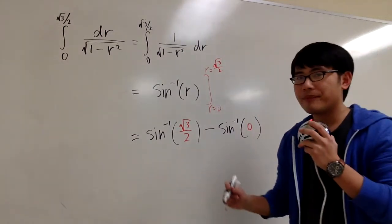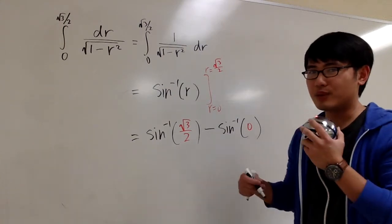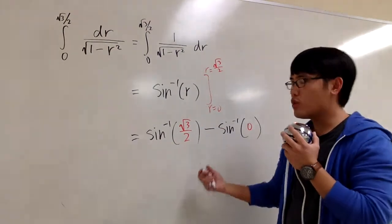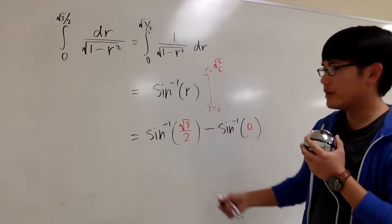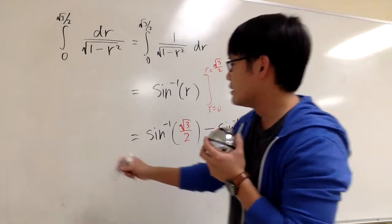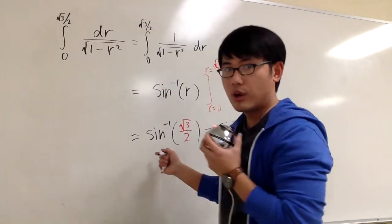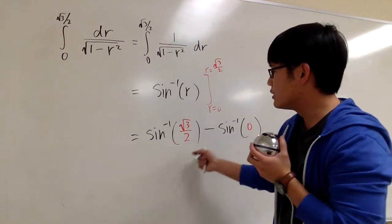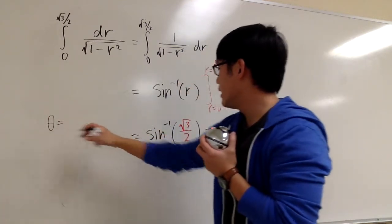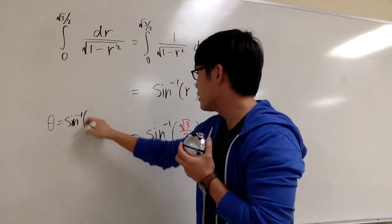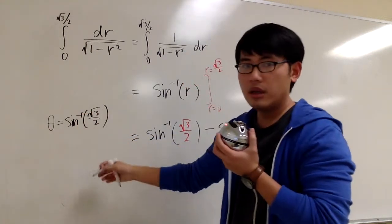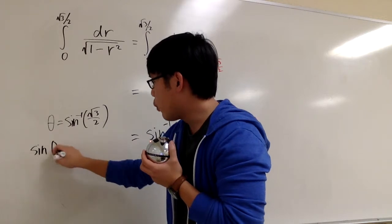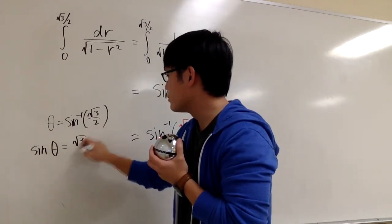To evaluate the inverse trig functions, you have to think backwards. In this sine situation, you have to ask yourself: sine of what angle will give you square root of 3 over 2 for the ratio? When you have an inverse trig function, the outcome is going to be an angle. Let's call that angle theta. So theta equals the inverse sine of square root of 3 over 2, and we can apply the regular sine on both sides.